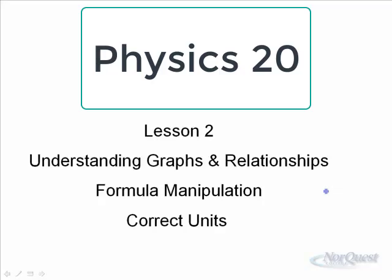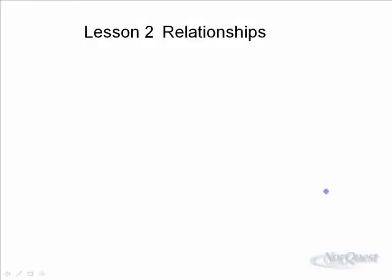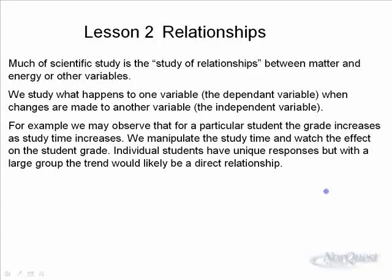In lesson two, we'll look at understanding graphs and relationships for manipulation and using the correct units. Much of scientific study is the study of relationships between matter and energy or other variables. We study what happens to one variable — the dependent variable, sometimes called the manipulated variable — when changes are made to another variable, called the independent, or sometimes referred to as the responding variable.